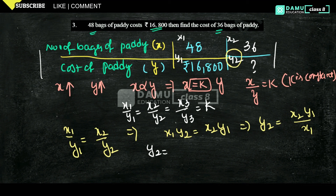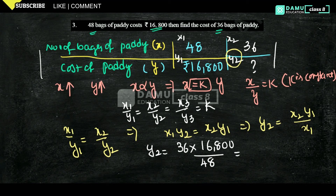Substituting the values: y2 = 36 times 16,800 by 48. Simplifying: 36/48 reduces to 3/4, so we calculate 3 times 16,800 by 4.